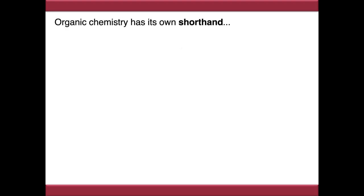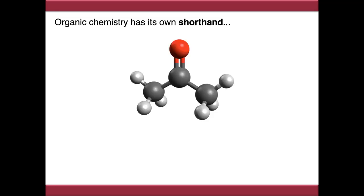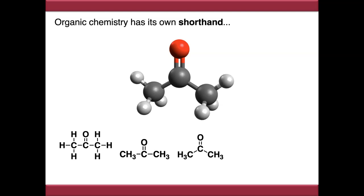Skeletal structures are basically a shorthand that we use in organic chemistry, because if we had to draw molecules like this, it would take us ages to convey anything. So we make a number of approximations and simplifications: using atom labels and drawing bonds as simple lines, using group labels such as CH3, approximating the shape of the molecule, and implying atoms like carbon or hydrogen, which makes the structure a lot simpler to draw and interpret.